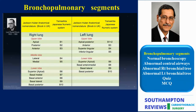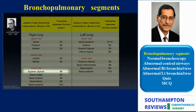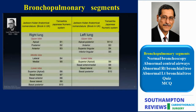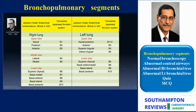There are minor differences between the UK and the US nomenclature. The Jackson-Huber calls segment 6 a superior segment, whereas Lord Brock calls it an apical segment. Throughout this series of videos, I will refer to the descriptive system followed by the numerical system for wider international benefit.